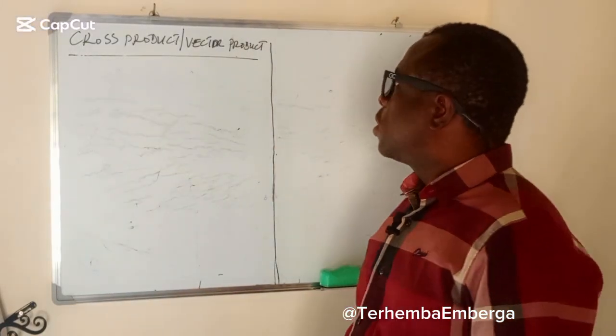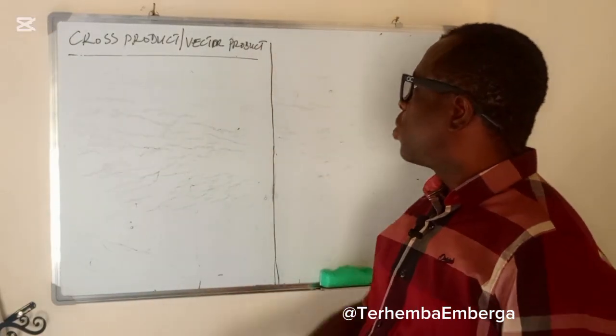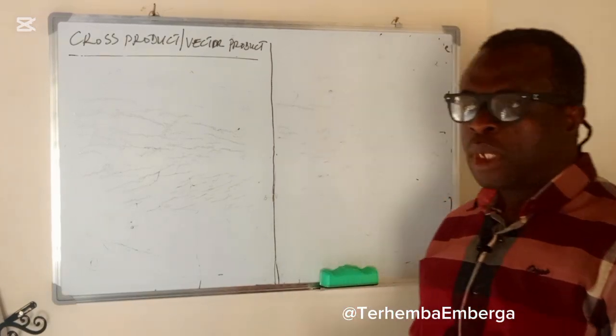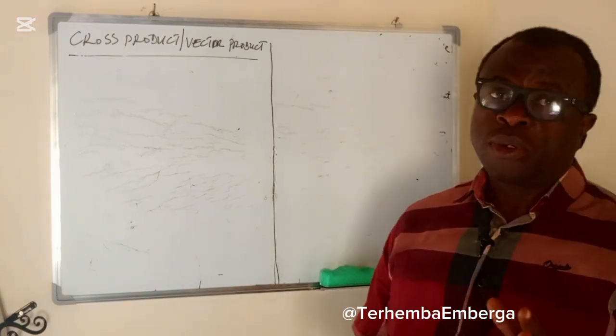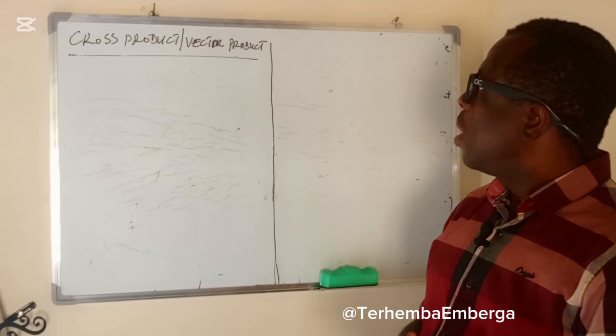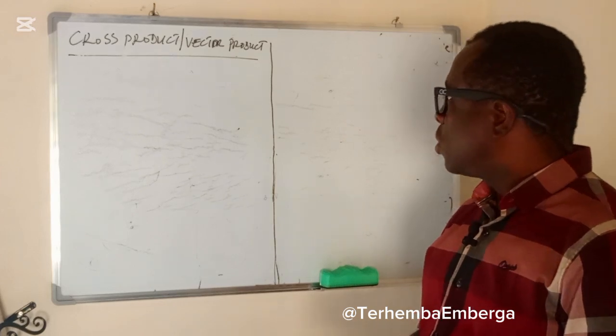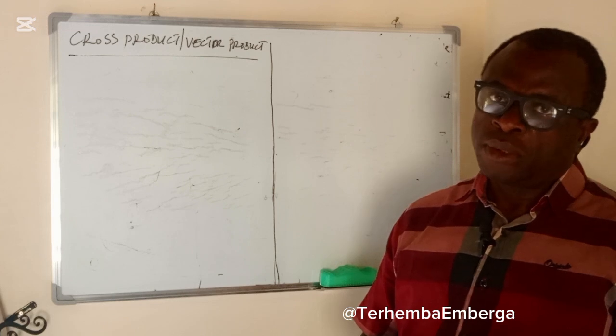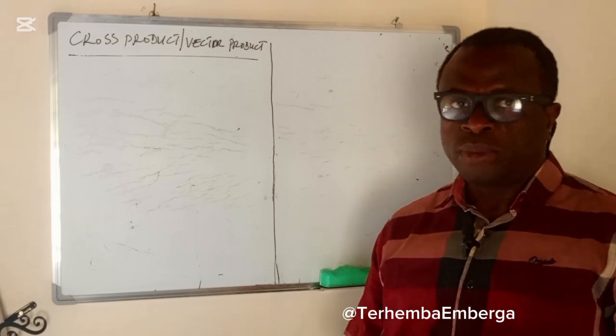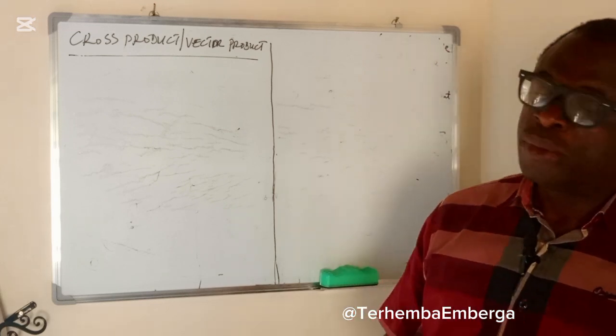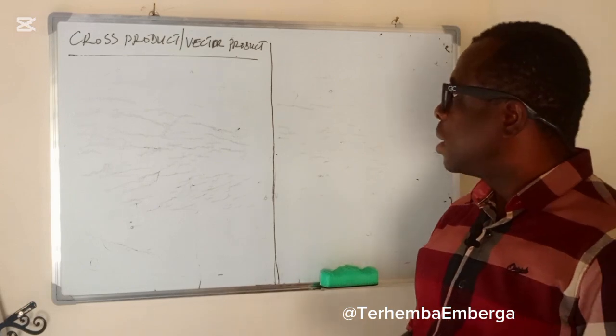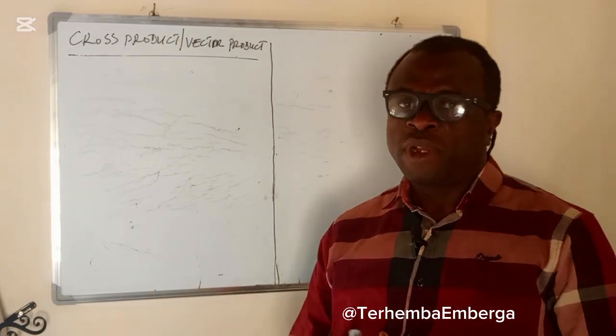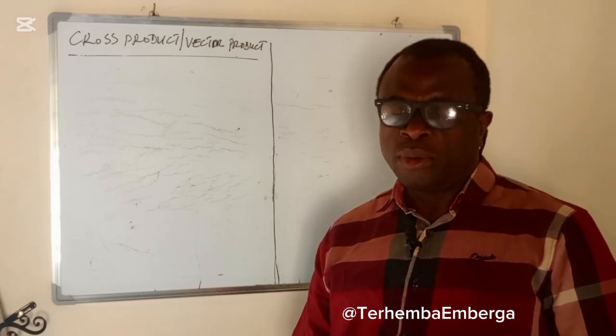We'll be looking at the cross products, what we call the vector products. They mean the same thing and we need to know that the cross products or vector products of two perpendicular vectors is not always equal to zero and can never be equal to zero, whereas the cross product or vector products of two parallel vectors is always zero.